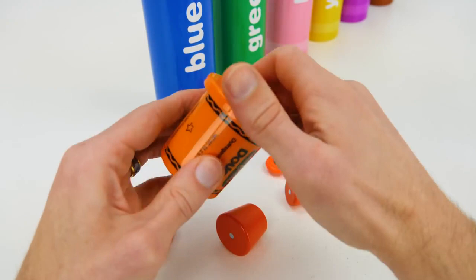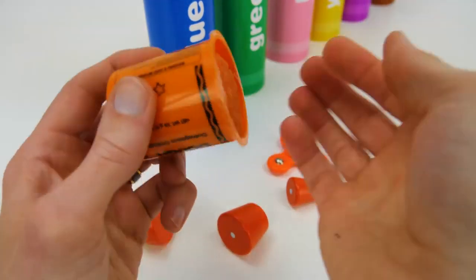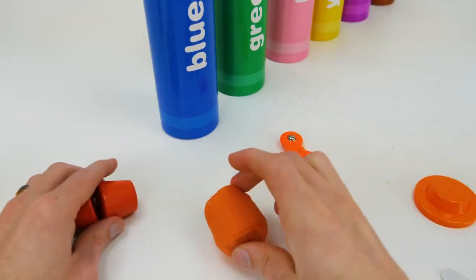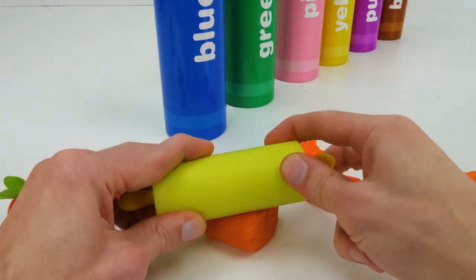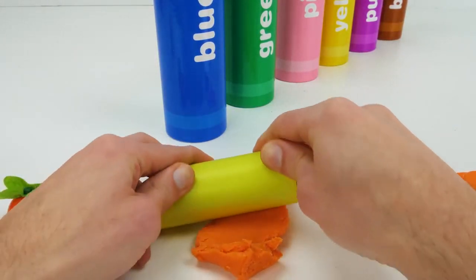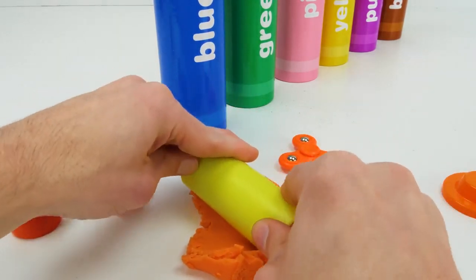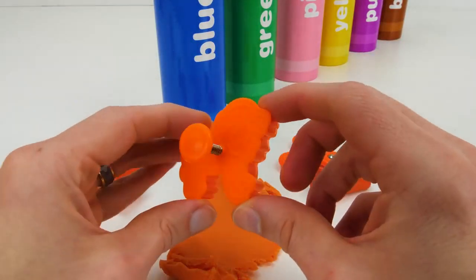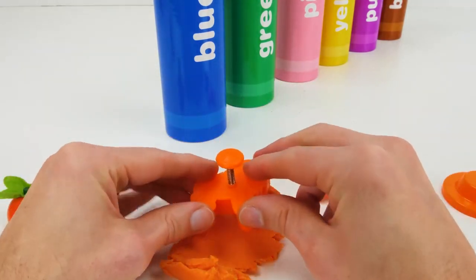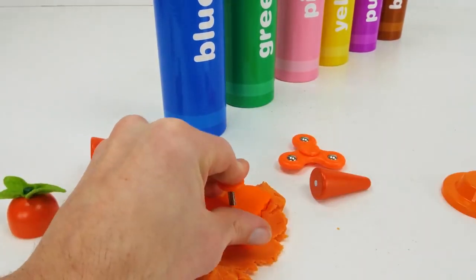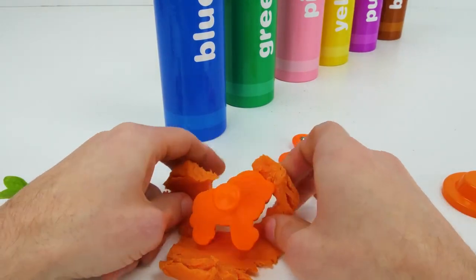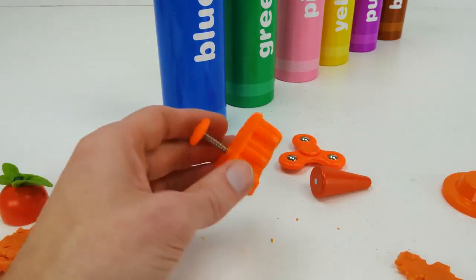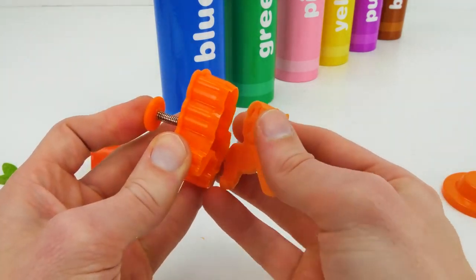Orange Play-Doh. Let's roll it out to make a shape. Orange cutter. Lion.